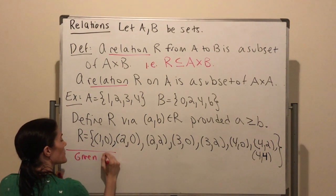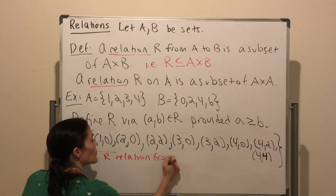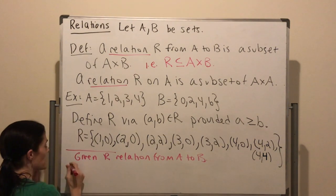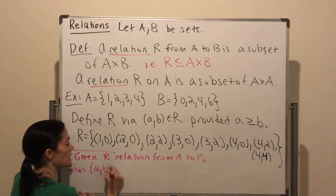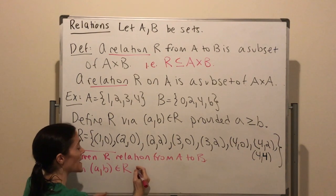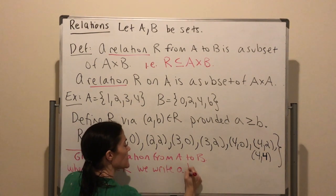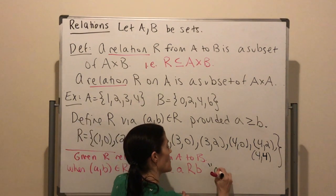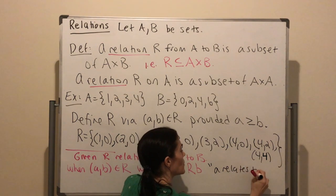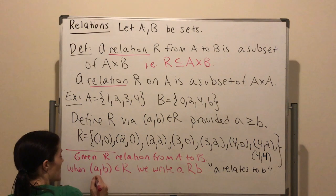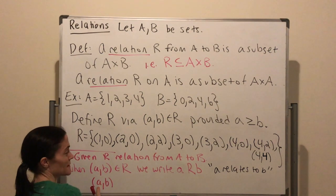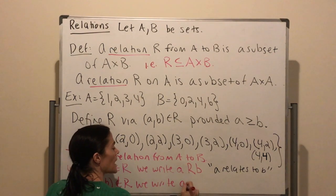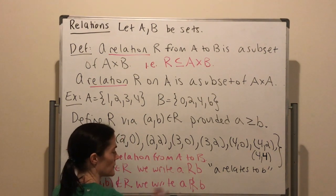Now I want to get into some important notation. Given a relation R from A to B, when an ordered pair (a, b) is in the relation, we write a R b, and this is read 'a relates to b.' When this ordered pair is not in the relation, we write a does not relate to b.